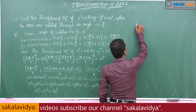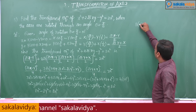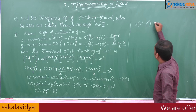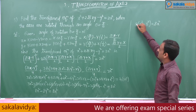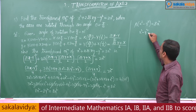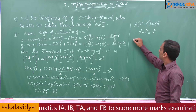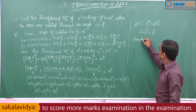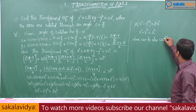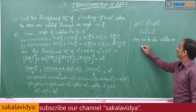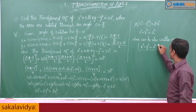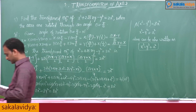Taking 8 common, we get 8 into (X square minus Y square) equals 8a square. Cancelling 8 on both sides, we get the required transformed equation: X square minus Y square equals a square.